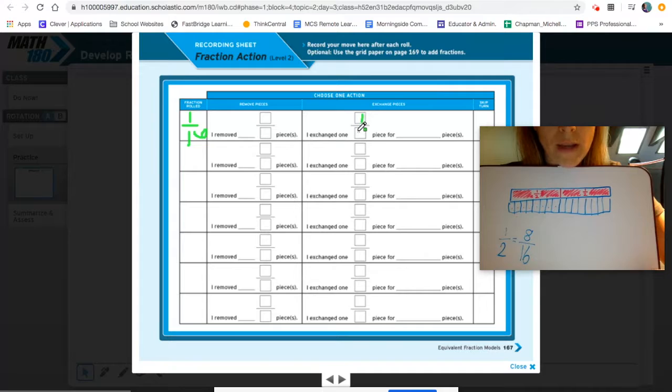I did not remove any pieces because I didn't have a one sixteenth. So I exchanged my one half piece for eight sixteenth size pieces. And that means that I'm done. If I had to skip my turn because there was nothing I could do, I could put my check mark here.